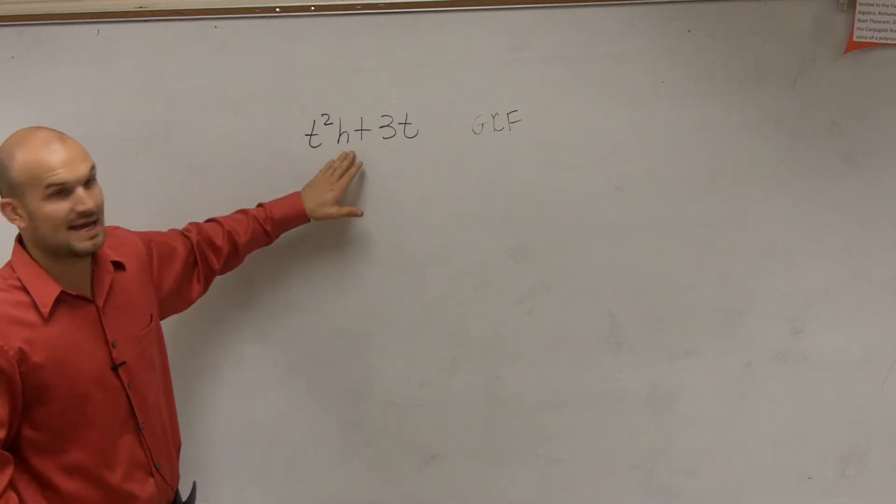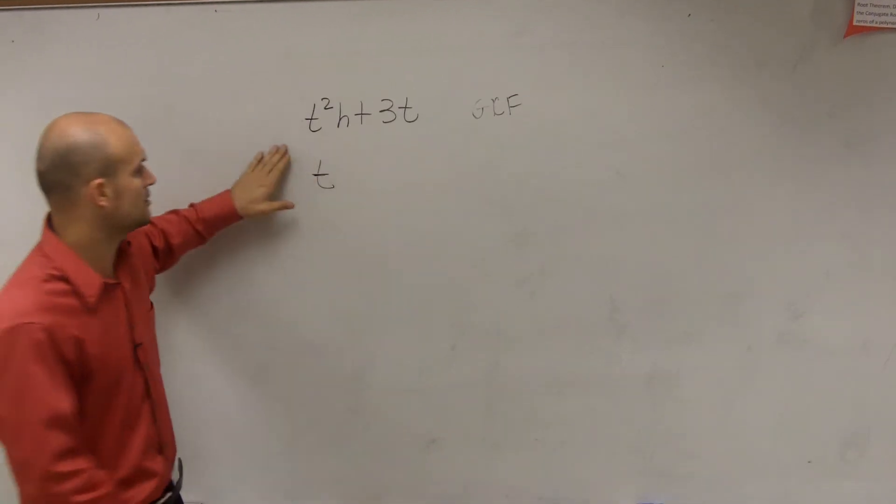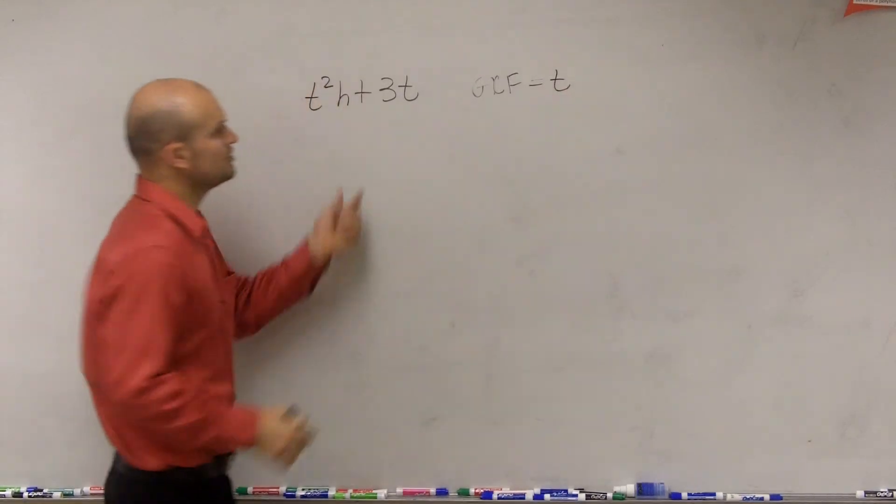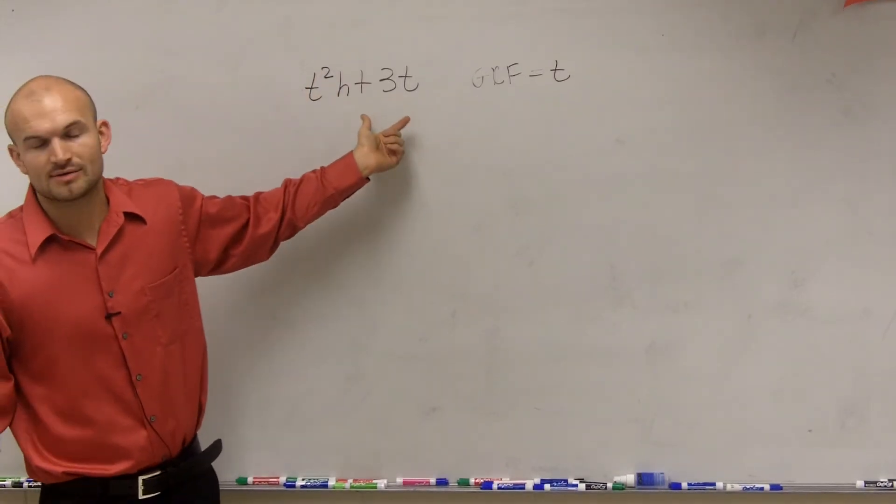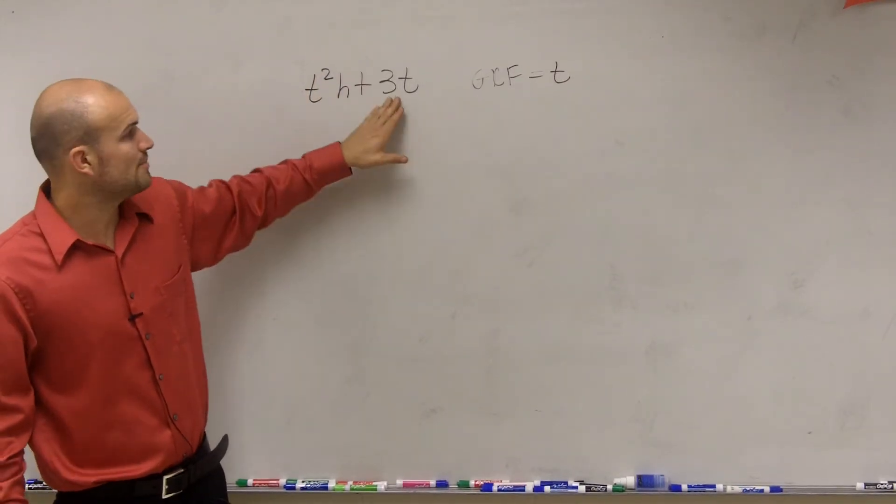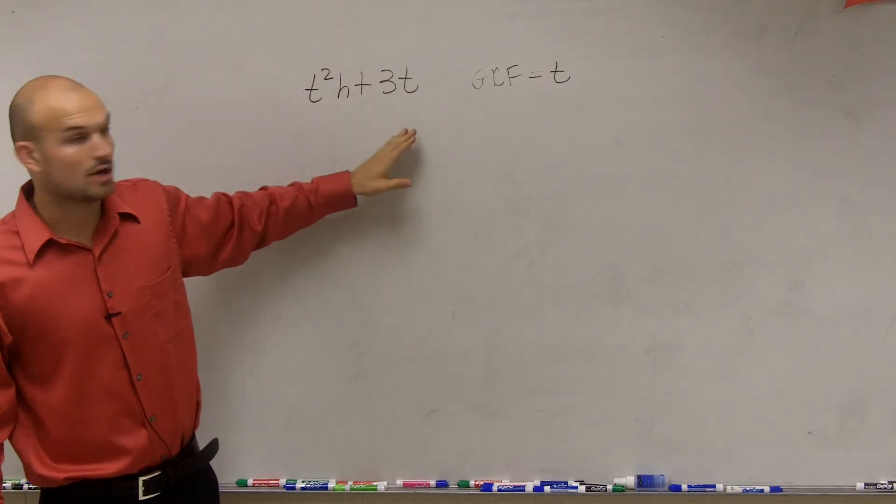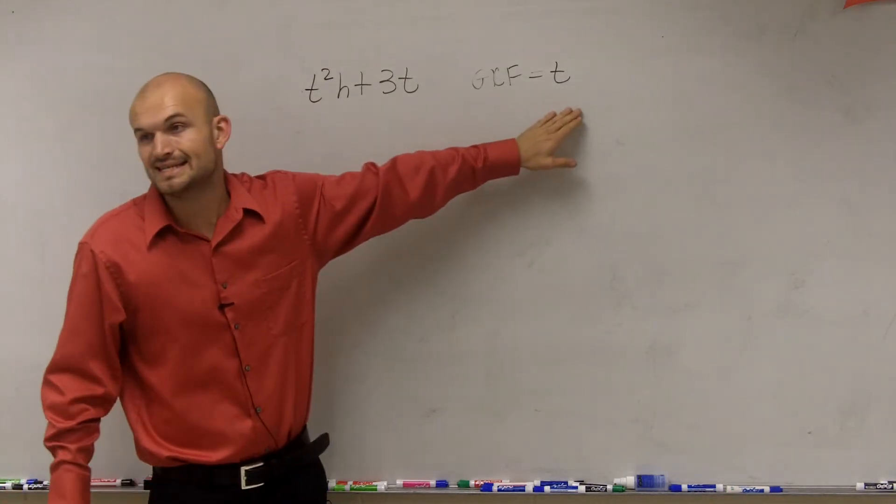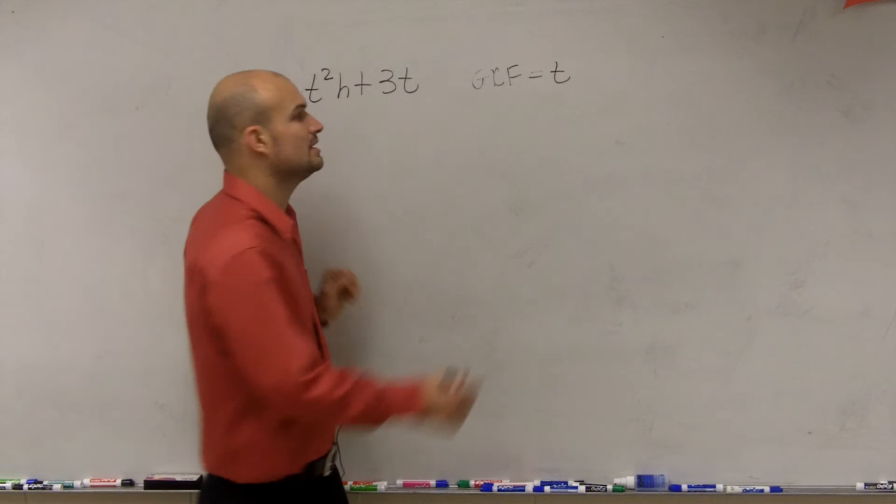Now I look at my h. Do they share an h? So the GCF is going to equal t. Do they both share a number? No. So therefore, the greatest common factor is t. So that's the first thing we need to do.